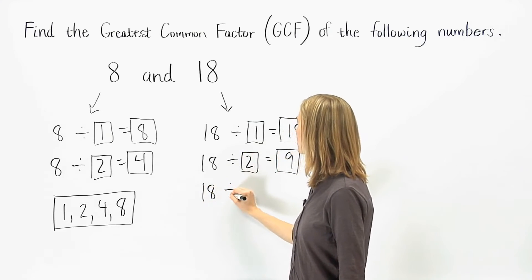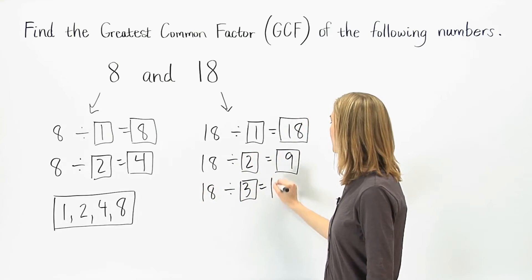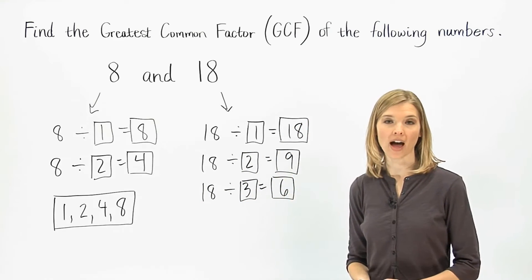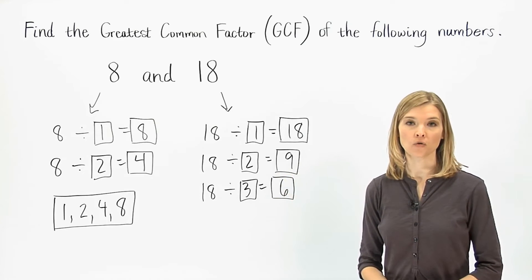18 divided by 3 is 6, so 3 and 6 are factors. However, if we continue to divide by 4, 5, 6, and so on, we won't find any new factors.